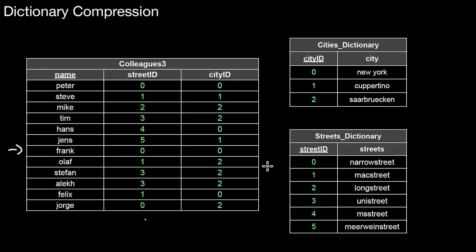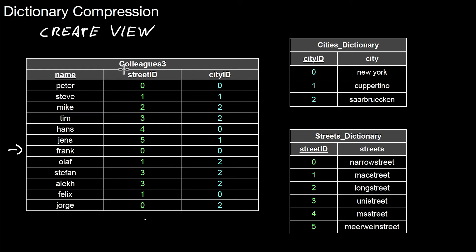If you are in this situation on your database and you created this at the schema level using three CREATE TABLE statements, you can still hide that representation from the user by creating a view. You could create a view called colleagues that returns the join over those three different tables — as we learned with the CREATE VIEW statement. You get rid of the original physical table colleagues and replace it with a view. Users don't even have to see this internal structure; the database system does all the magic.